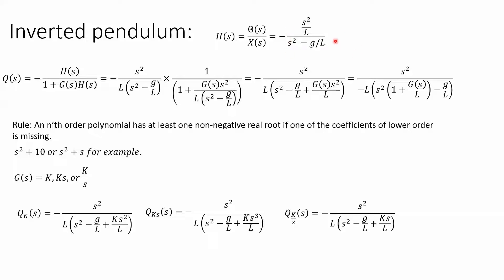It's negative. If I pull the cart to the right, the pendulum will go in the opposite direction. So let's do our control theory and put it into our Q(s) equation where we have the transfer function divided by 1 plus our proposed feedback. If we work through the algebra, we'll see we have s² divided by -L, and then s² times (1 plus some unknown transfer function) divided by L minus g/L.